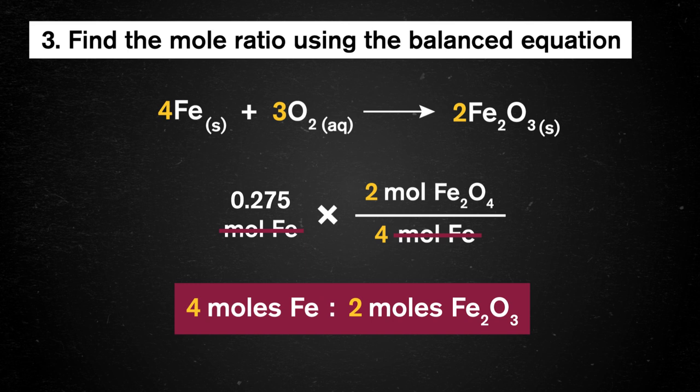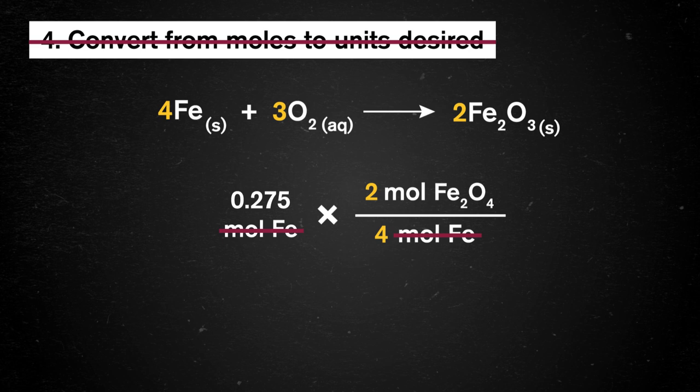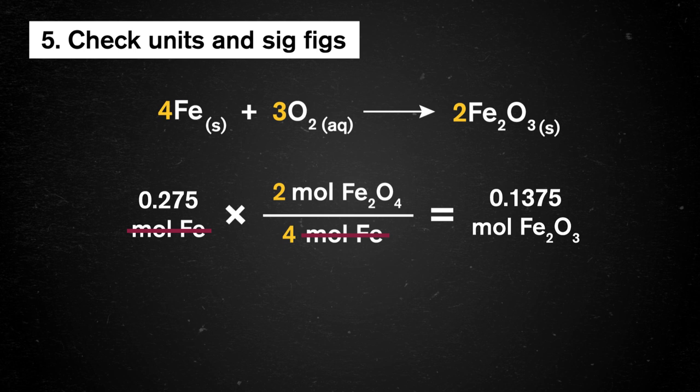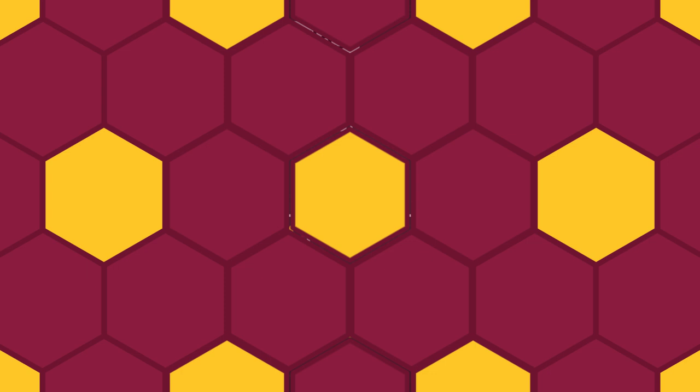We can skip step 4, converting from moles to our desired units, because again, we're already in moles. Very convenient. And when we multiply across our conversion, our result is 0.1375 moles of iron oxide. The last thing we need to do is round to the proper sig figs, so we end up with 0.138 moles as our final answer.